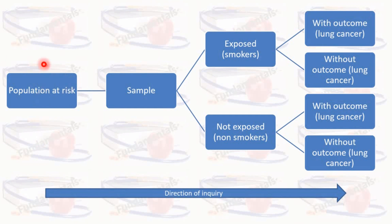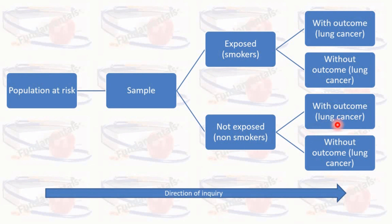The population at risk is drawn from the community and researchers select the sample. Similarly, two groups are formed: exposed — in the case of smoking, smokers are exposed and non-smokers are not exposed. Among smokers, those who develop the disease and those who do not; similarly, among non-smokers, those who develop the disease and those who do not. The direction of inquiry is still in the forward direction.